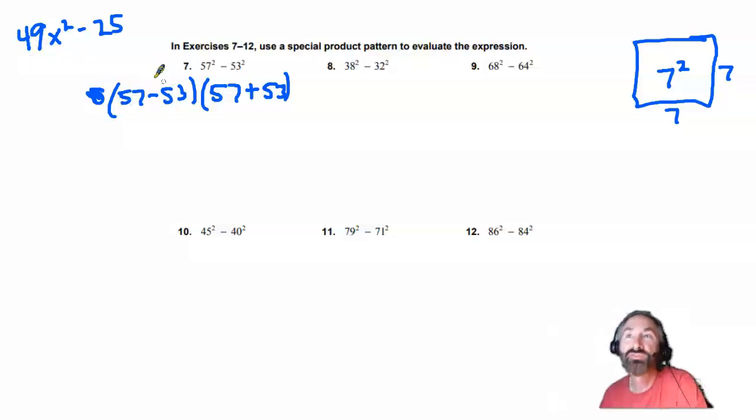Here, 57 minus 53 times 57 plus 53. So, you'll notice 57 minus 53 is a very simple result. It's just 4.